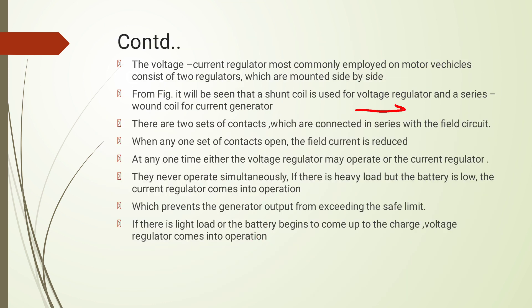When we open a set of contacts, we interrupt the field. At any one time, either the voltage regulator or the current regulator may operate — they do not operate simultaneously. Under heavy load when the battery is low, the current regulator operates to keep the output within a safe limit. Under light load conditions, the battery voltage begins to come up, and then the voltage regulator comes into operation.